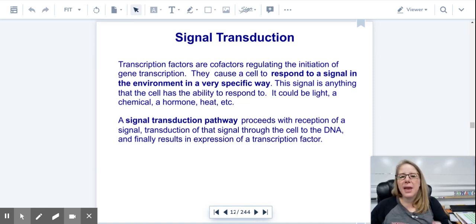Signal transduction. To make the signal go from one part of the cell to the other, you need signal transduction. That happens with some transcription factors and cofactors. They cause the cell to respond to the signal in the environment in a very specific way. The signal is anything that the cell has to respond to. It could be light, chemicals, hormone, heat, or touch. Anything that a cell will respond to. You can think of what you respond to. You respond to chemicals when you're like, that smells delicious, I'm going to get a cookie, or that smells terrible, I'm leaving this room. Or touch when somebody gives you a hug. You're responding to all those things. The signal transduction pathway proceeds with the reception of the signal, and then it transduces that signal all the way through to the DNA, to the nucleus, so it can express the right transcription factors.